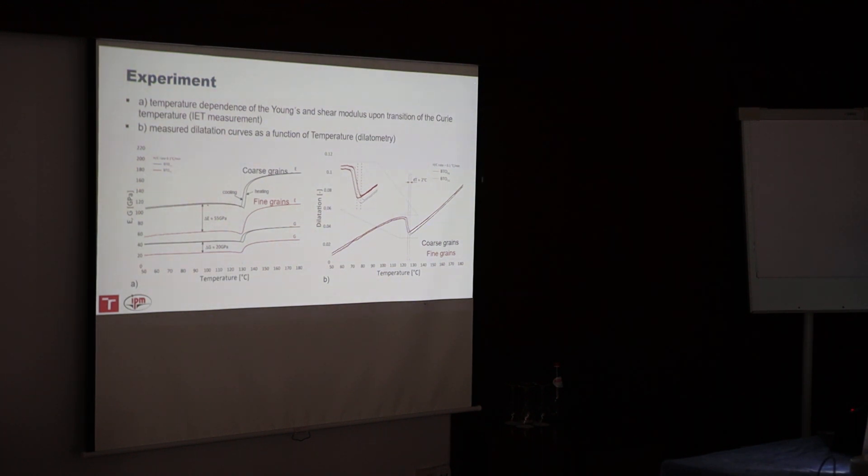We then measured the Young's modulus, the elastic properties. Here we see again that upon transition temperature, there is rapid increase of the Young's modulus and also of the shear modulus. Here we see again the dilatometric curves. There are always two curves. The red ones are for the fine microstructure, the black ones for coarse grain microstructure.